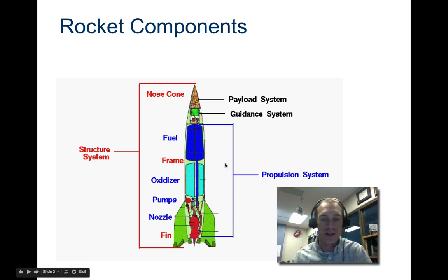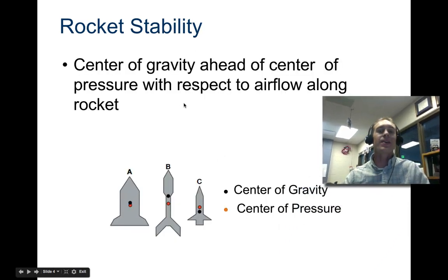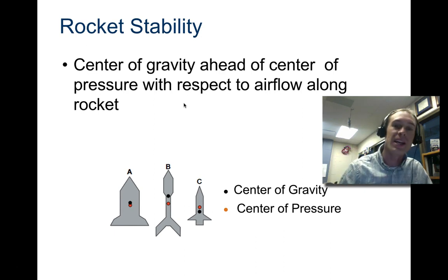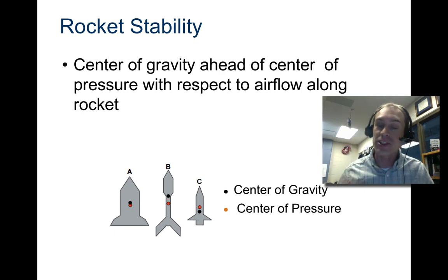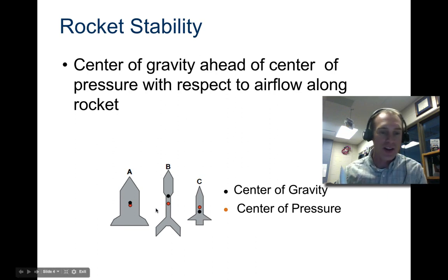Make sure you draw those rocket components out. Center of gravity has to be in front of center of pressure — G before P, just like the airplane. That's what allows the rocket to stay stable.